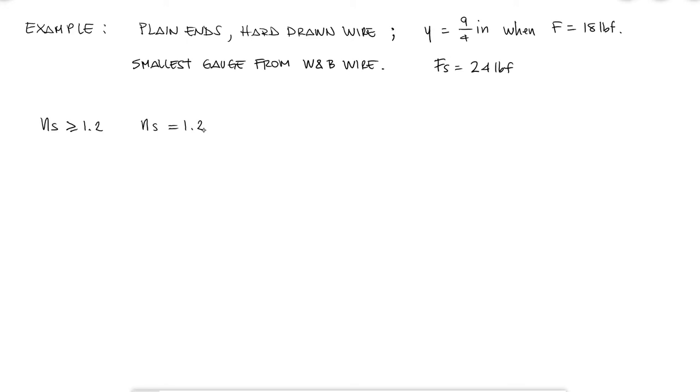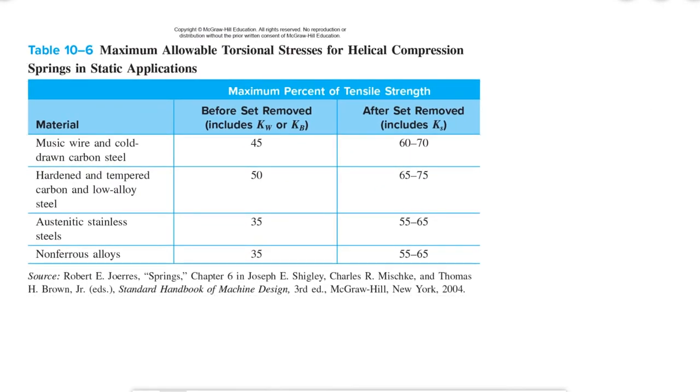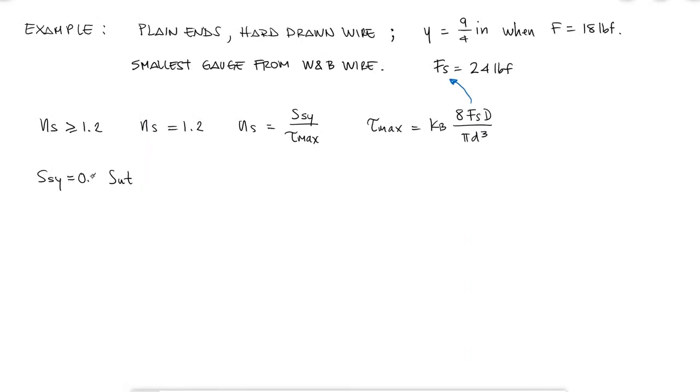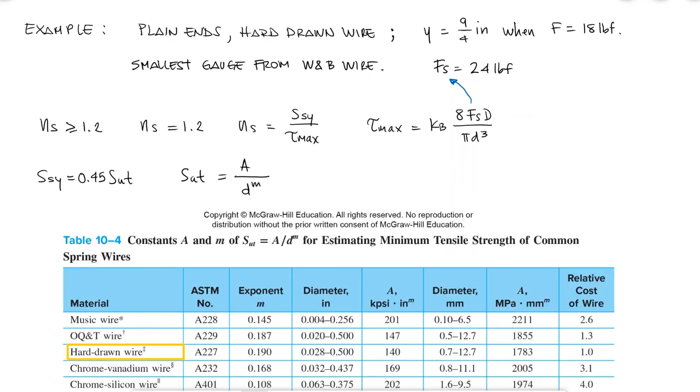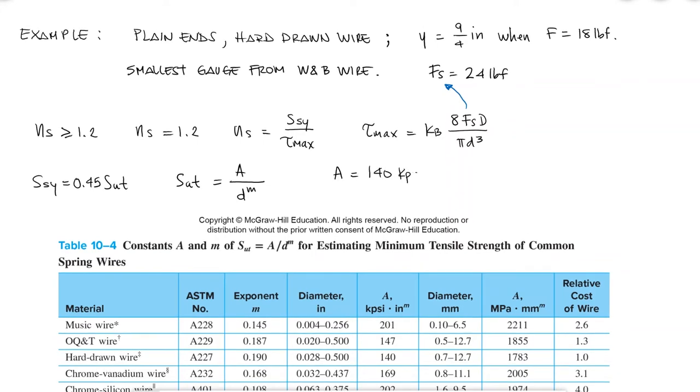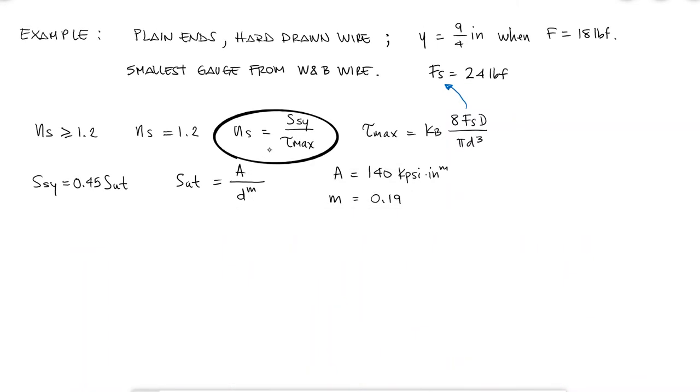And I know that the factor of safety against yielding is defined as the shearing yield strength over the maximum possible shearing stress, which happens when the spring is fully compressed to its solid length. We also know that the shearing yield strength is a fraction or percentage of the tensile strength. And since pretension was not mentioned, I find that this percentage is 45%. I also know that the tensile strength is a function of the diameter and of course the material, which for a hard-drawn wire, I find that the A coefficient is 140 and the exponent M 0.19.